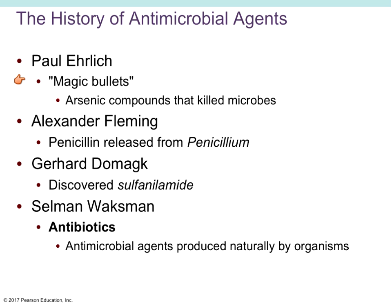Gerhard Domagk discovered sulfonamides, which act as competitive inhibitors. They look like PABA, a compound that microbes need for various parts of their metabolism. Sulfonamides actually prevent the microbes' metabolism, which prevents their ability to make energy and thus kills them. This also led to the understanding that antimicrobial agents can be produced naturally by organisms, much the same way that penicillin is just naturally produced as a natural antibiotic fungus.